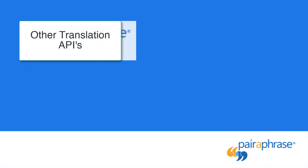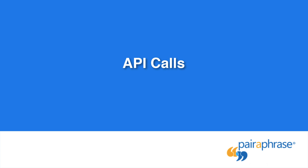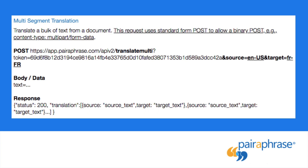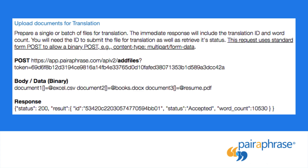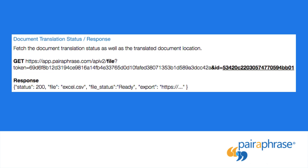Now that you know just some of the reasons Paraphrase is different from most translation APIs, let's talk API calls. The following are some of the API calls available with Paraphrase: Segment translation, to translate single sentences or paragraphs. Multi-segment translation, to translate a bulk of text from a document. Upload documents for translation, to prepare a single or batch of files for translation. Submit file for translation, to submit a document's ID for full translation. Document translation status/response, to fetch the document translation status as well as the translated document location.